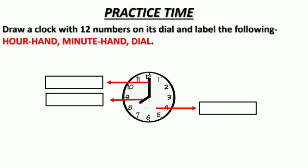Now, it's practice time. Question is, draw a clock with 12 numbers on its dial and label the following - hour hand, minute hand, dial.